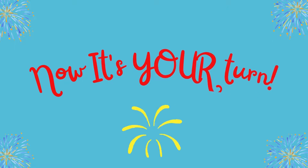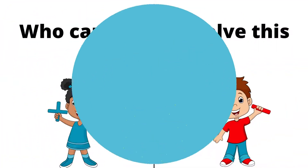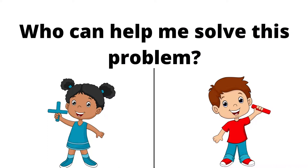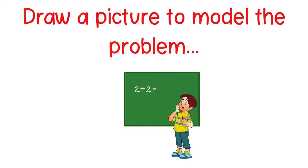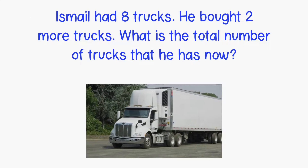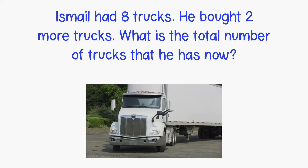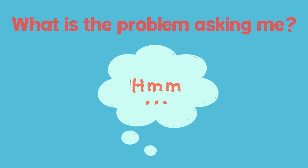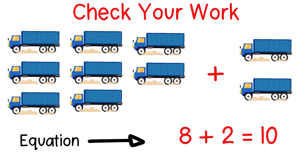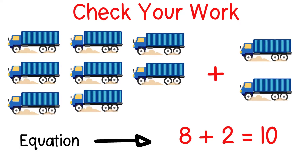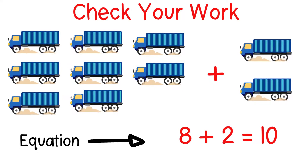All right friends, now I want to see how much you've learned. I'll read the next problem and then I want you to solve it without my help. Don't forget to think about who can help you solve the problem. Also don't forget to draw a picture to model your problem and then see if you can write an equation to match. Here's your problem: Ishmael had eight trucks. He bought two more trucks. What is the total number of trucks that he has now? Here's my picture that shows what happens when you start with eight and add two more — you have a total of ten. Eight plus two equals ten. Does your picture look similar to mine? Does your equation look like mine? If it does, great job. If not, that's okay. Just keep practicing and you'll get better and better.